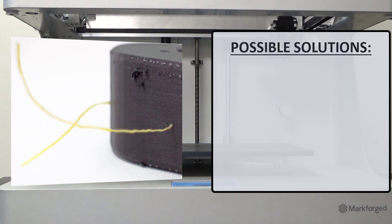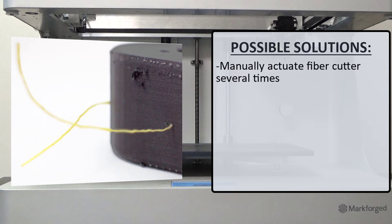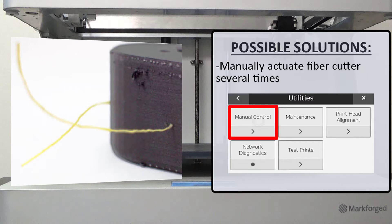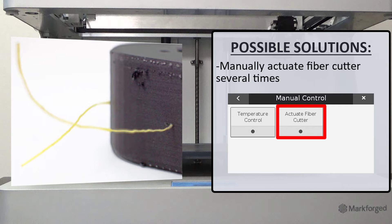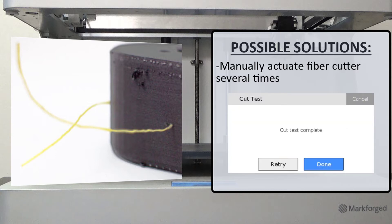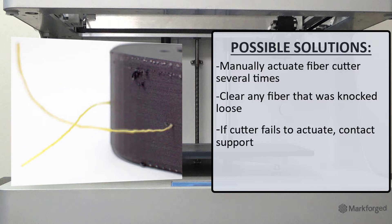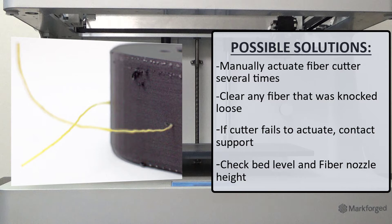Some of the recommended troubleshooting steps would be to manually actuate the fiber cutter several times and verify that the servo moves. To do this, navigate to Menu > Utilities > Actuate Fiber Cutter. Press Next to actuate the cutter for the first time, then press Retry to repeat the test as many times as necessary. Press Done when you wish to exit the utility. If necessary, clean any fiber knocked loose by actuating the cutter. If the cutter fails to actuate, please contact support. If no issue is found with the fiber cutter, check the bed level and fiber nozzle height for any issues where the fiber appears to not be adhering to your part correctly.